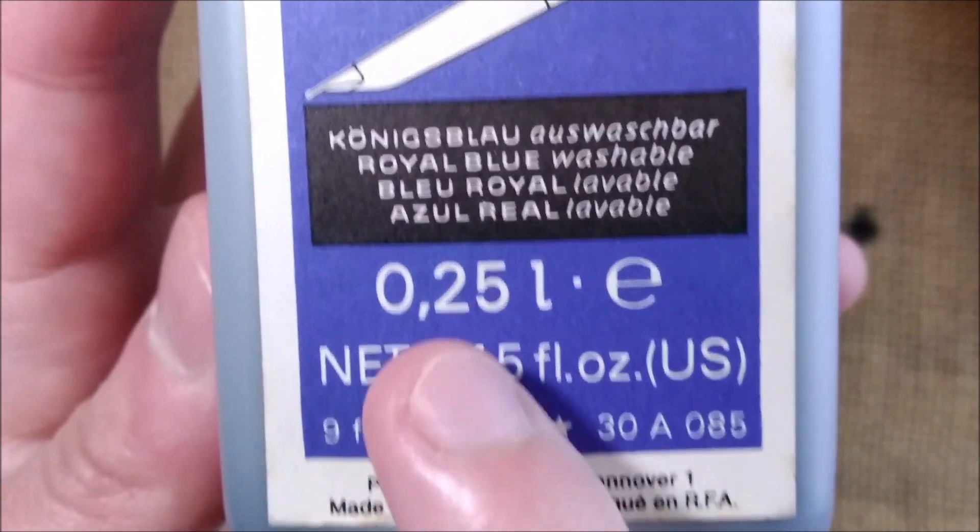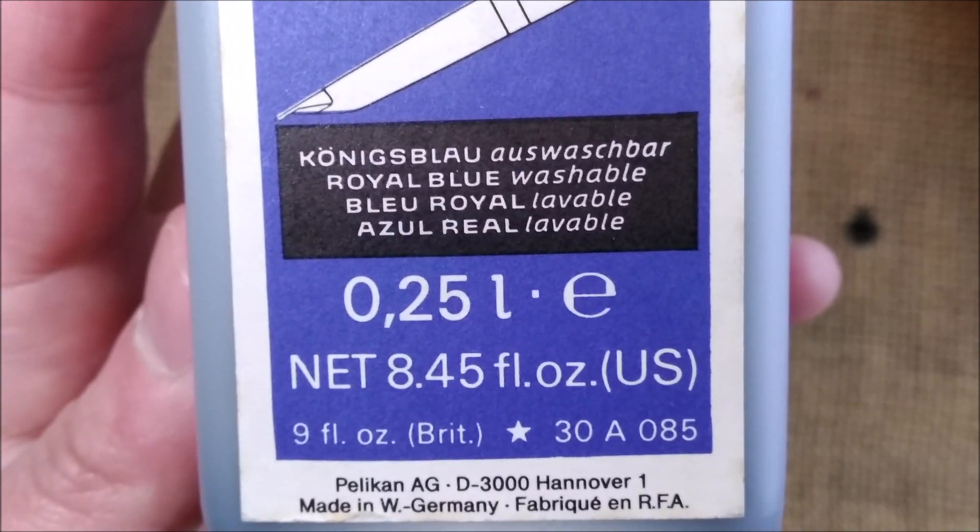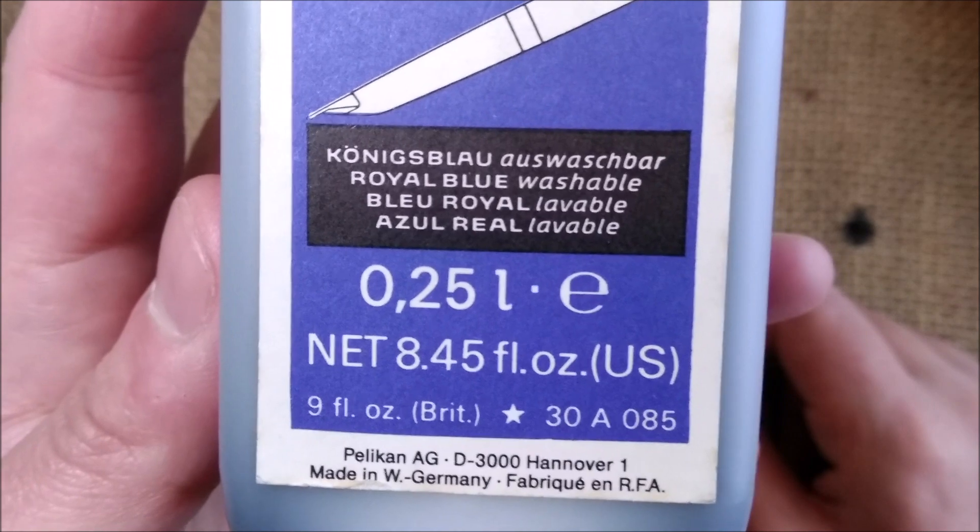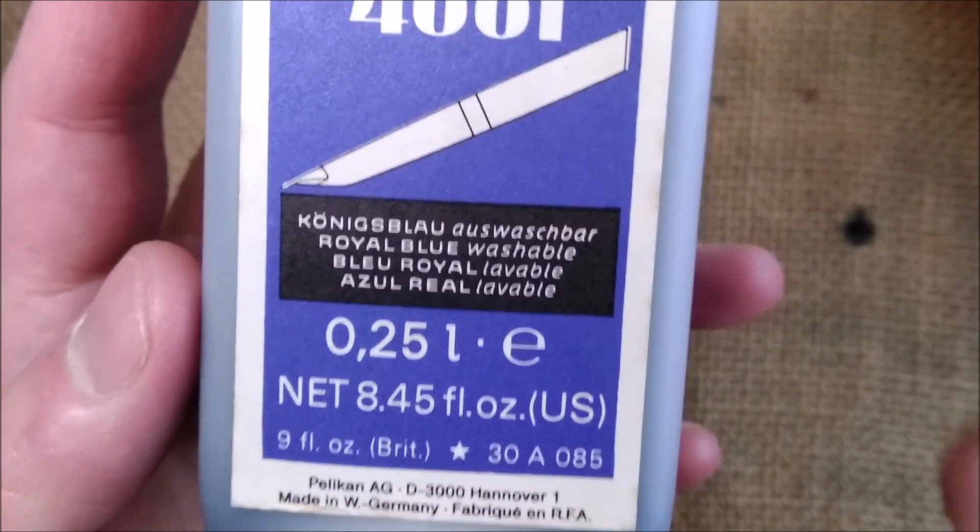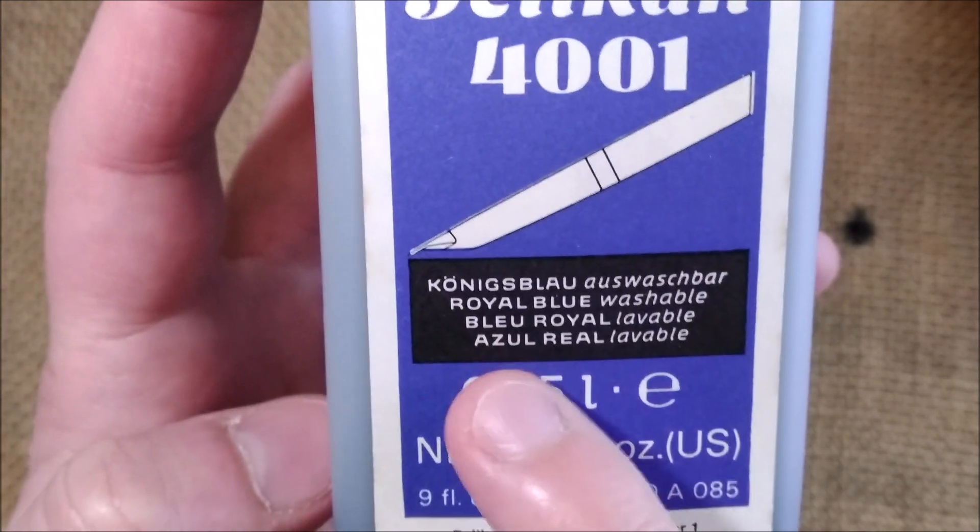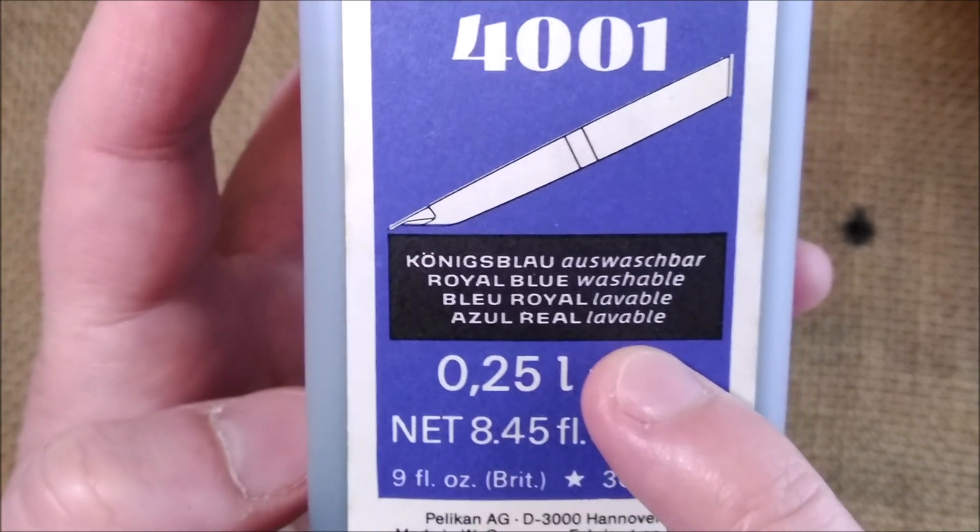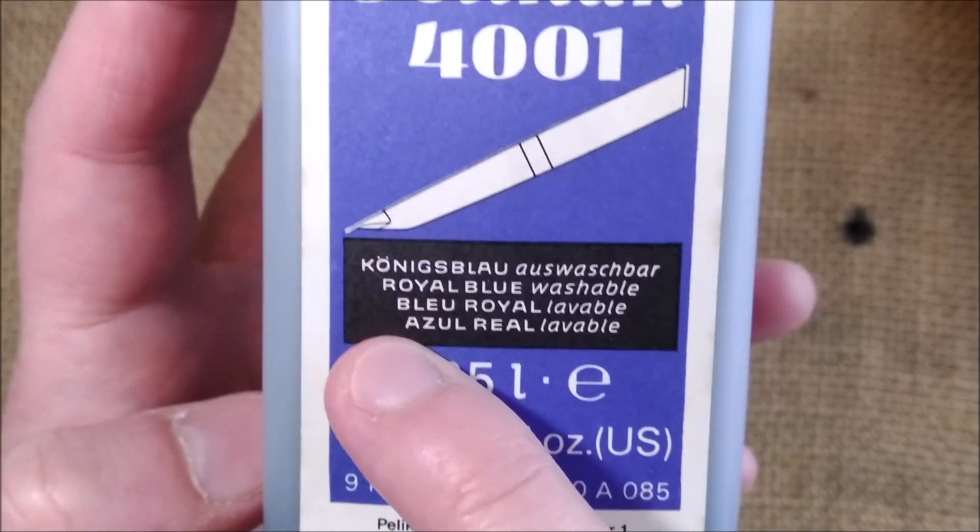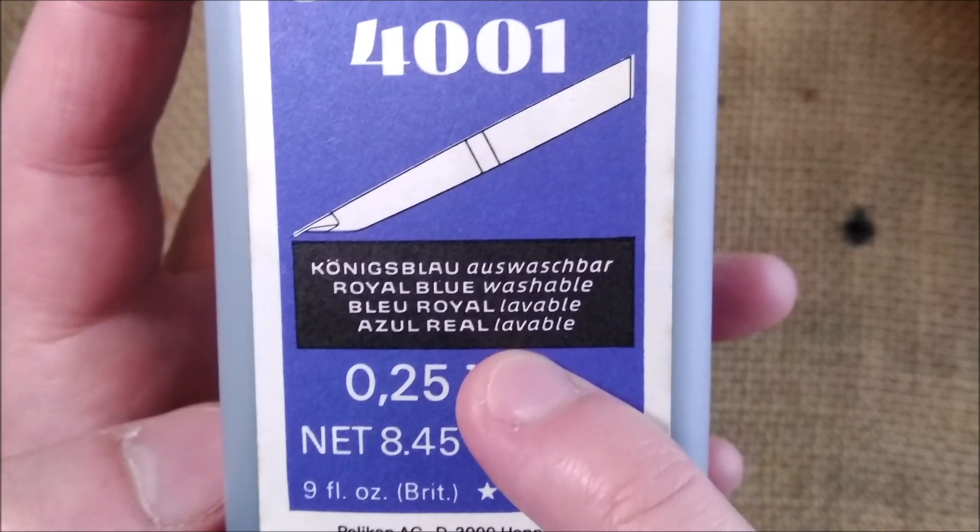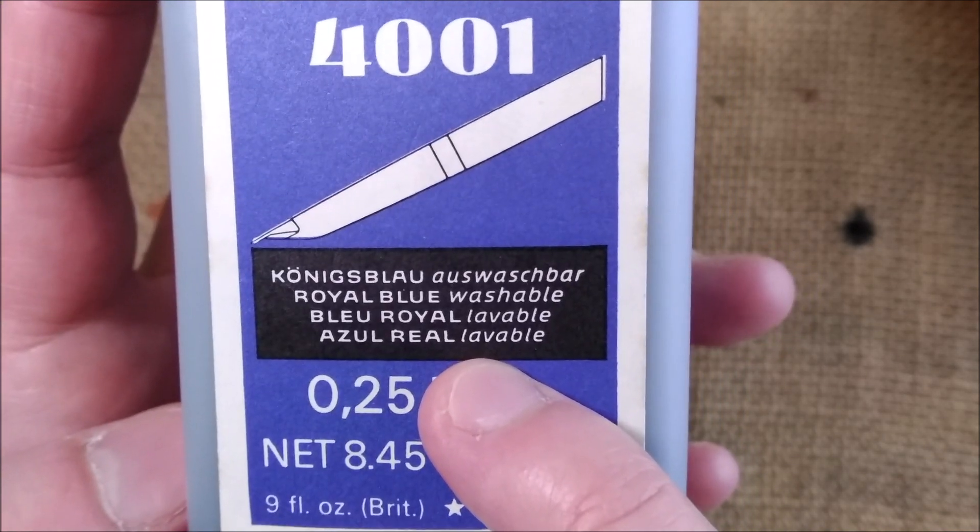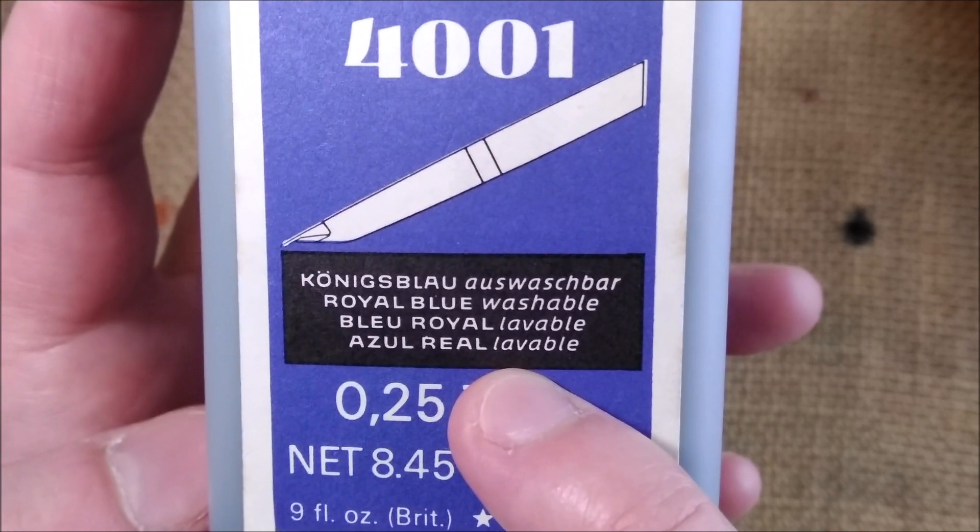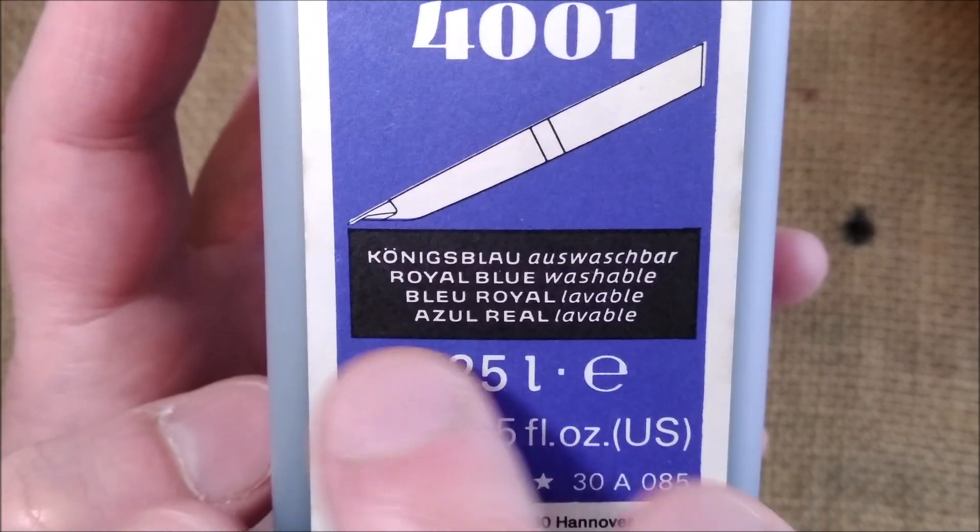Washable, or azul real, which is the Portuguese translation. However, this is not Portuguese; this is Spanish, because in Portuguese is azul real, in Spanish is azul real. And then it says 'lava' and in Portuguese it would be 'lavável.' But we can understand these words are exactly the same, the first two.